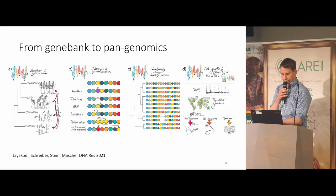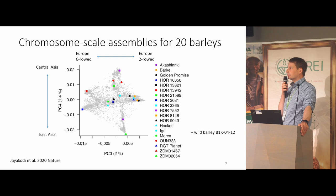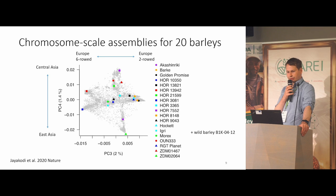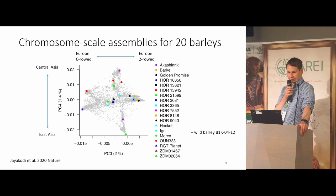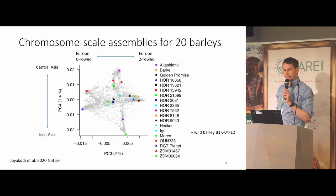In the first stage of the barley pan genome project we constructed chromosome-scale sequence assemblies for 20 barleys — assemblies as good as the Morex reference genome published about five years ago. We selected accessions to represent the barley diversity space as best as possible. The PCA shown here separates Europe into two-row and six-row barleys, and Asia into east and central Asian barleys. In addition to domesticated accessions, cultivars, and landraces, we also selected a single wild barley from Israel.